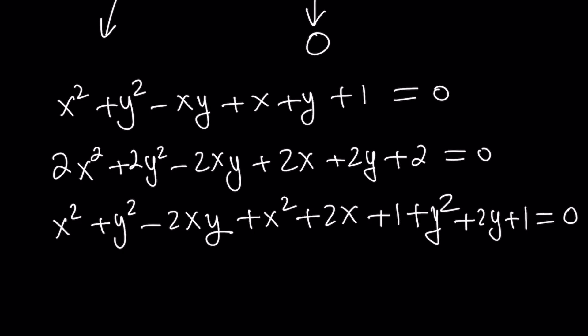Of course, this doesn't always work. If it does, it does. Now we have x minus y squared plus x plus 1 squared plus y plus 1 squared is equal to 0.